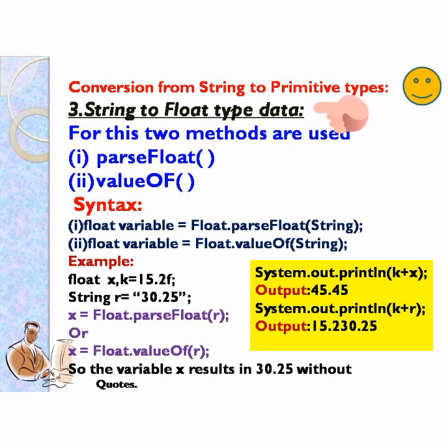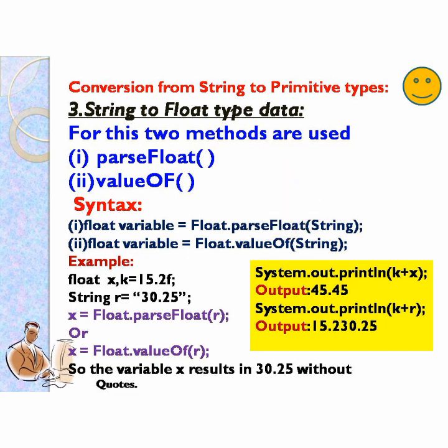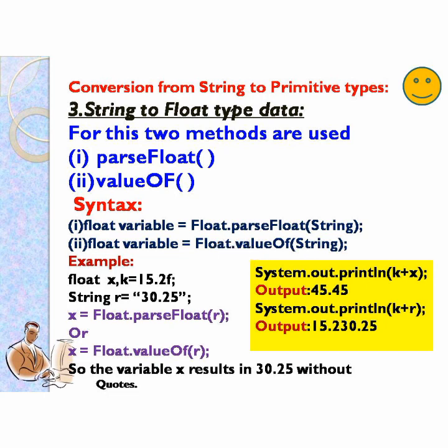Next, how to convert string to float type. Here also two methods: parseFloat or valueOf. Syntax: float variable equals to Float.parseFloat(string), or float variable equals to Float.valueOf(string). For example, float x, k equals to 15.2f — f is the default suffix for float. String r equals to "30.25". Using x equals to Float.parseFloat(r), the string r converts to float, so x results in 30.25 without quotes.